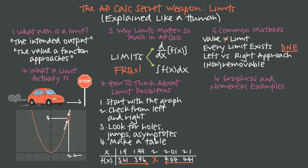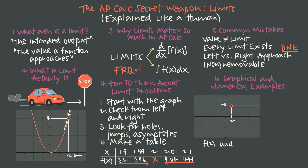Let's work through an example. We want to find the limit as x approaches 2 using a graph. At x equals 2, the function is undefined — f(2) is undefined. But tracing in from the left side, we're coming in along y equals 5. From the right side, we're also coming in along y equals 5. From both directions, we're approaching 5, so the limit as x approaches 2 of f(x) equals 5 — even though f(2) itself is undefined.